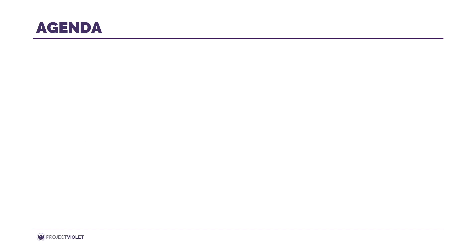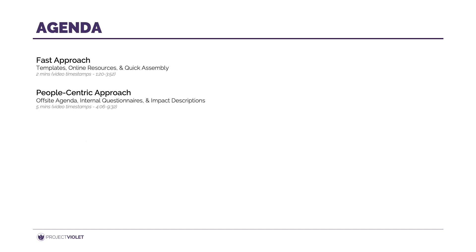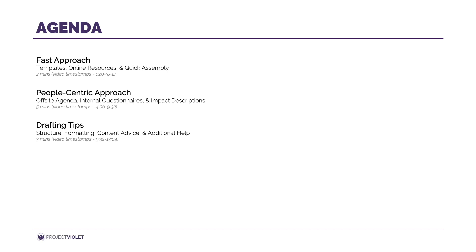Here's what we have lined up for you today. We'll start with the fast way of doing it — not the best approach, but sometimes you need to just get the job done quickly. From there, we'll talk about how to build job descriptions in a more bottom-up way that's customized to your company and incorporates your people. We'll provide some tips on how to structure, format, and draft the content. And finally, we'll talk about how to set up a process that includes review and approval, and eventually maintaining these job descriptions and keeping them up to date as your company grows and evolves.